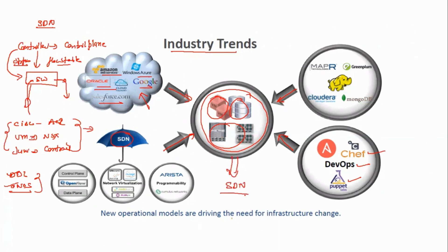In a nutshell, SDN — software defined networking — makes your network on demand. Imagine you have a data center and a new application is going to be launched. The server team builds the server, then the network team configures all VLANs, trunks, SVIs, and access lists, and then the request goes to the security team.